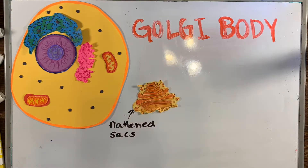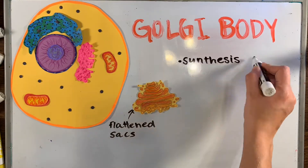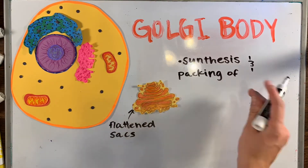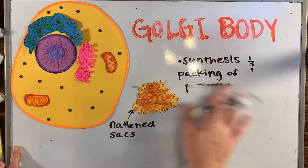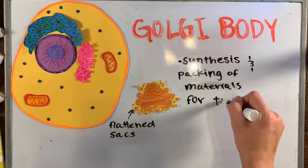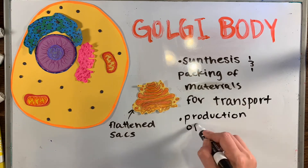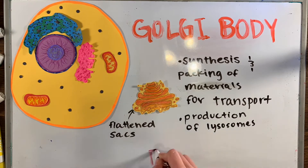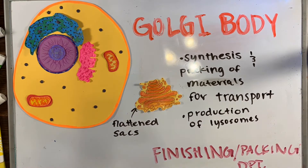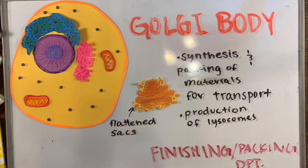Next up we have the Golgi body, which is a series of flattened sacs used for synthesis and packaging of materials to transport and for the production of lysosomes. In a factory, the Golgi body would be like the finishing or packaging department.